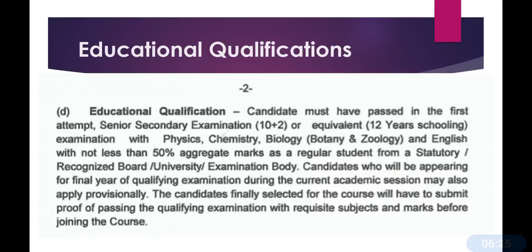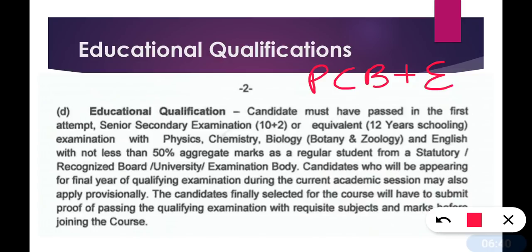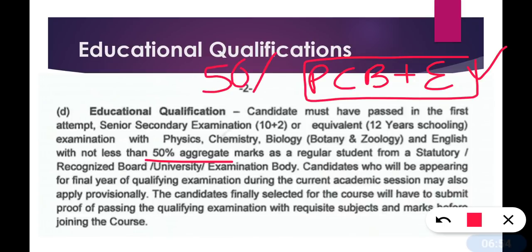Next is education qualification. The most important thing is that it is a 10+2 course — meaning you must have passed 12th. Your 12th must be with PCB (Physics, Chemistry, Biology) plus English as a regular student — this is important. You should not have done 12th from any private institute; you must be a regular candidate of that school. The aggregate percentage required across these 4 subjects must be 50% or above to be eligible for MNS. The candidate must have passed in the first attempt. If any candidate has a compartment in 12th, she is not eligible for MNS.